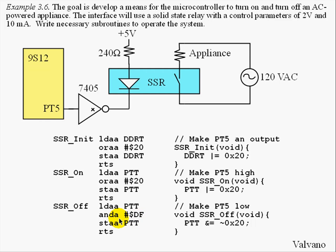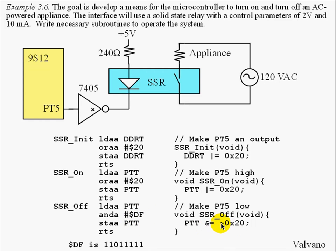The third function is used to turn the appliance off by clearing bit 5 using the AND instruction. Load and AND store is a way to clear bits. If we look at the value DF, we can see that it has a zero in the bit 5 position, so when we AND with DF, bit 5 will be cleared. When we write it in C, we use an AND equals instruction with tilde so that the compiler calculates the DF value automatically rather than us calculating it explicitly.